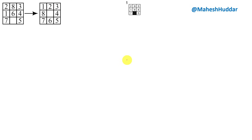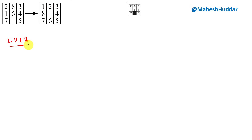First we will define what the possible moves are. We can move this blank in four directions: left, up, right, and bottom. These are the four possible moves we can perform on a given state.